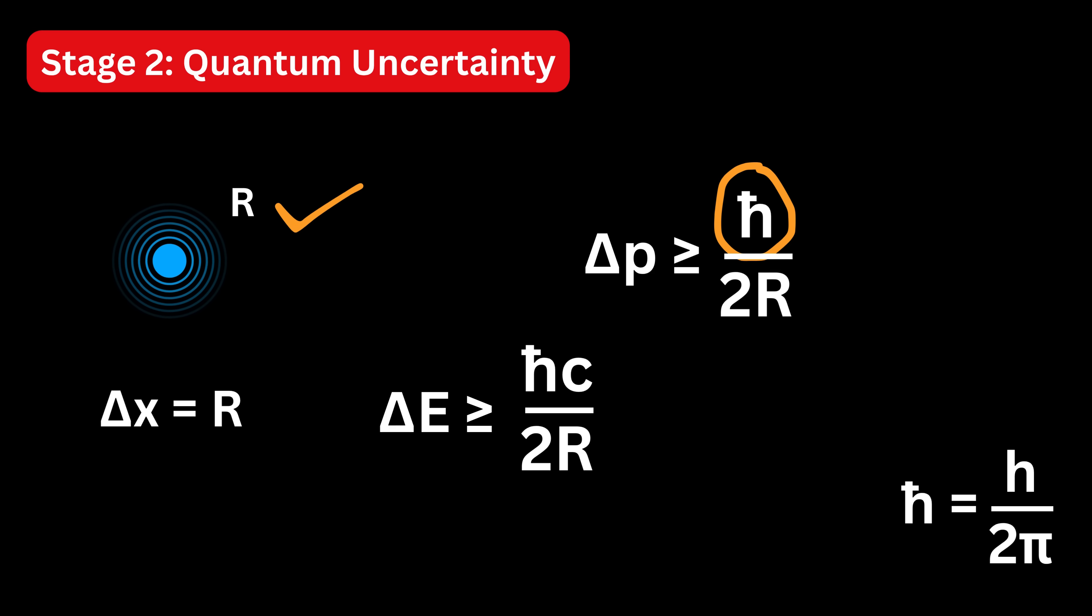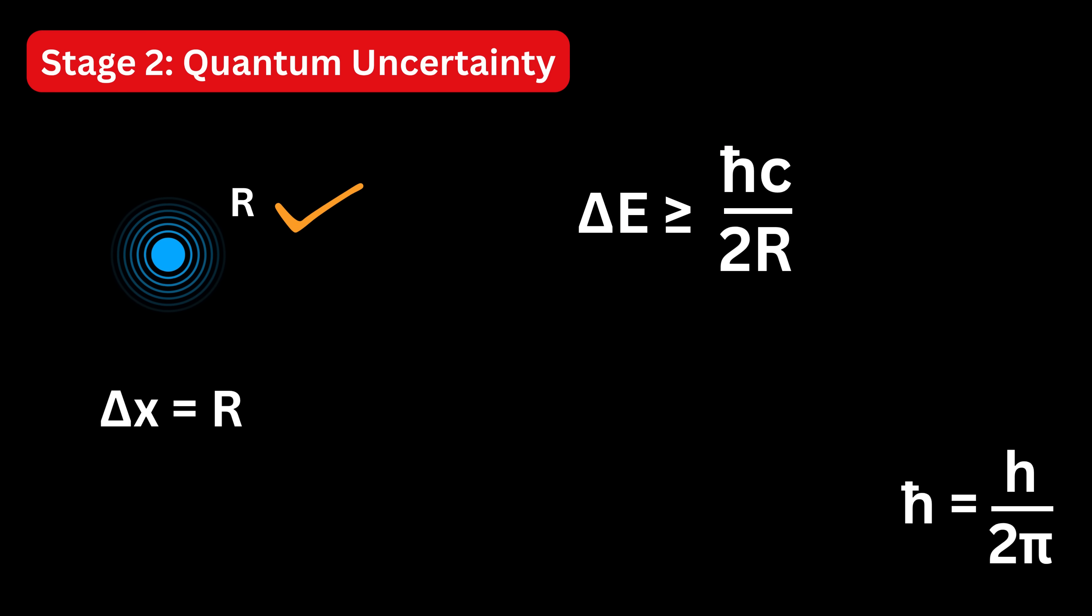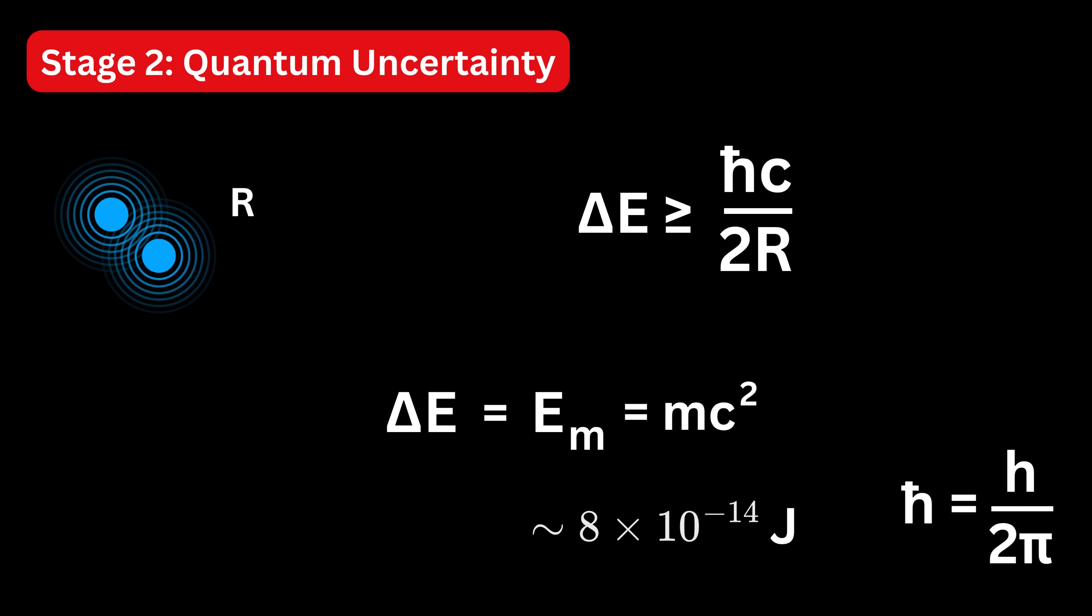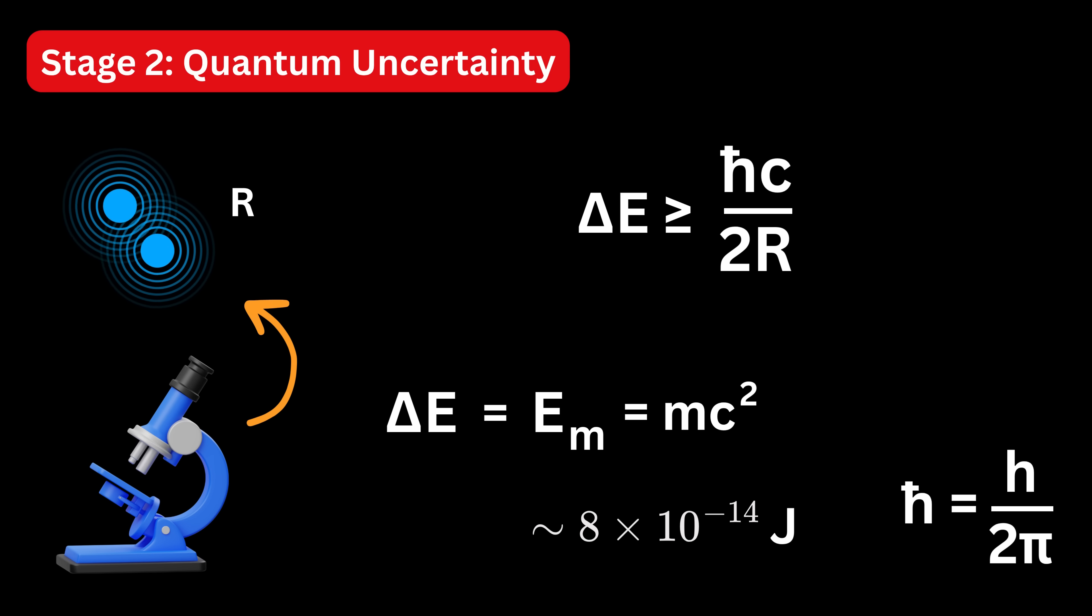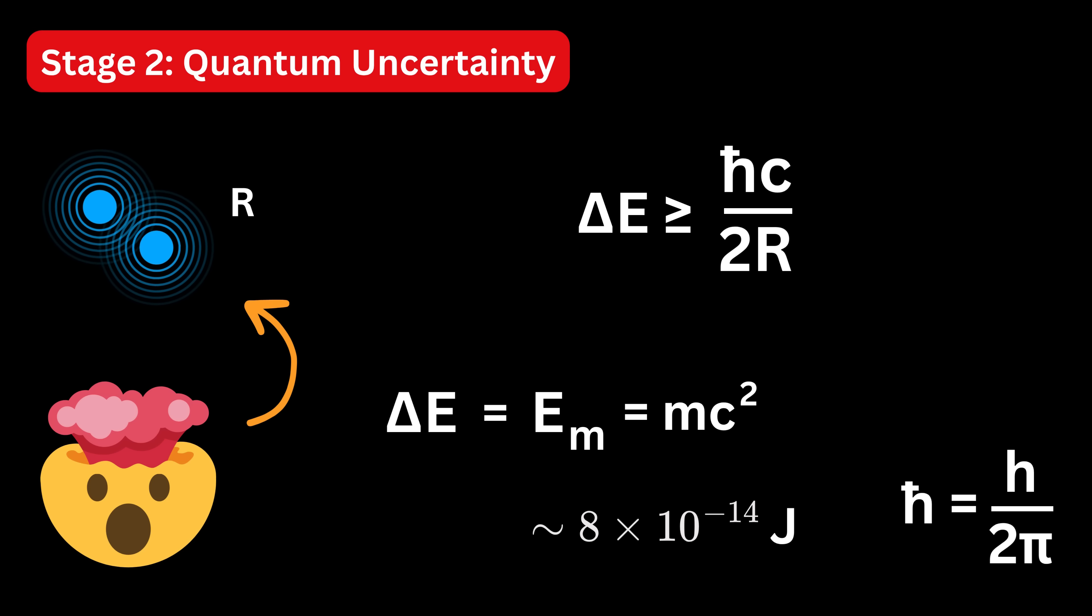Now, here's where it gets wild. If that energy uncertainty becomes big enough, say, equal to the rest mass energy of an electron, which is m times c squared, which is roughly this value, then something remarkable can happen. That much energy in a tiny space can lead to the creation of new particles. In other words, trying to look too closely inside a particle actually creates new particles.